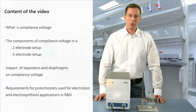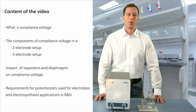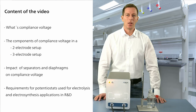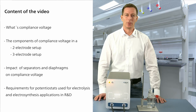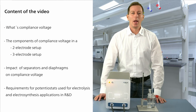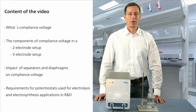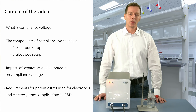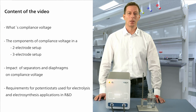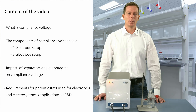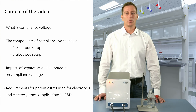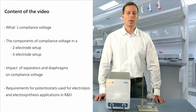Here is a quick summary of what I will talk about in this video. First I will explain what compliance voltage is and why it is such an important parameter. Then I will present the most common electrode setups — the 2 and the 3 electrode setup — and the impact of separators and diaphragms on compliance voltage. To explain this in more detail we will run two measurements in a 3 electrode setup. At the end I will explain how to choose the proper potentiostat for electrolysis and electrosynthesis applications in R&D.